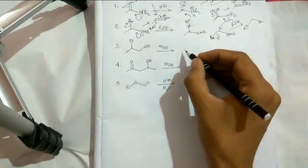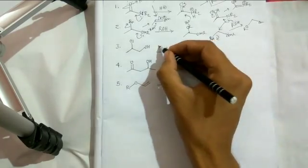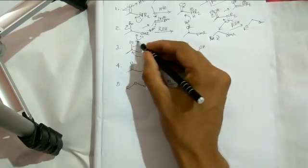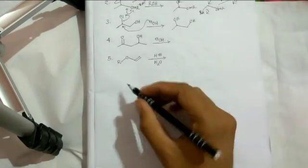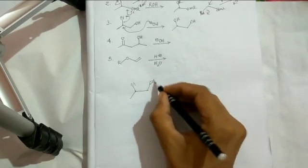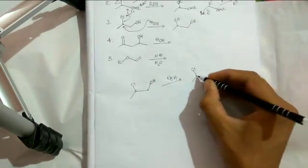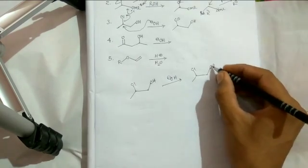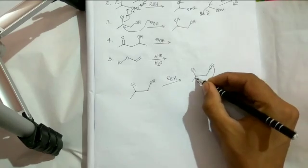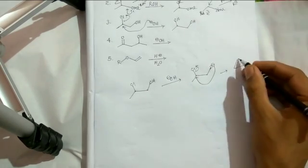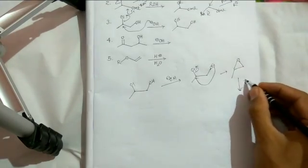The next mistake involves another apparent SN2 reaction where you get a diol. You might push the arrow directly to get the product, but that is not the correct mechanism. What actually happens is: first, when you react with base, the center is deprotonated to give an alkoxide, and that alkoxide attacks to form an epoxide intermediate.